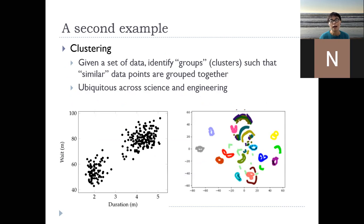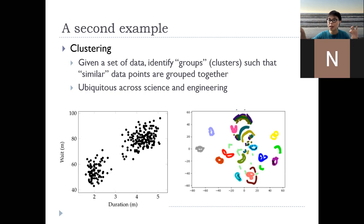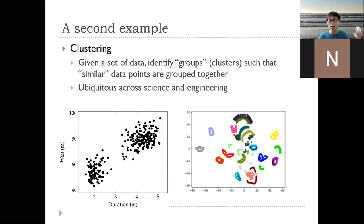Here's a second example: clustering, another very common data analysis task — by far one of the most ubiquitous tasks a practitioner does with data. Given a set of data, you want to identify groups called clusters so that similar data points are grouped together, while dissimilar things are separated into different groups. Here's a concrete example: the Old Faithful geyser in Yellowstone, whose name partially comes from its somewhat predictable eruption pattern. We can collect data — each point represents the duration of an eruption and the waiting time until the next one. Once you plot these points, we visually see two clusters quite clearly.